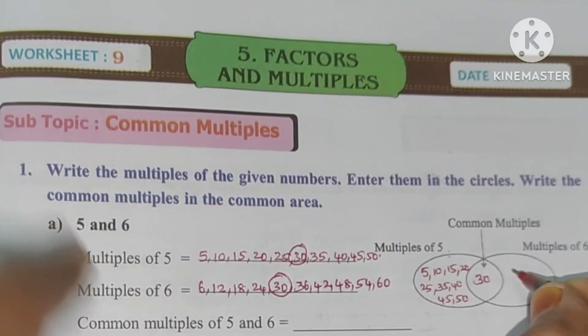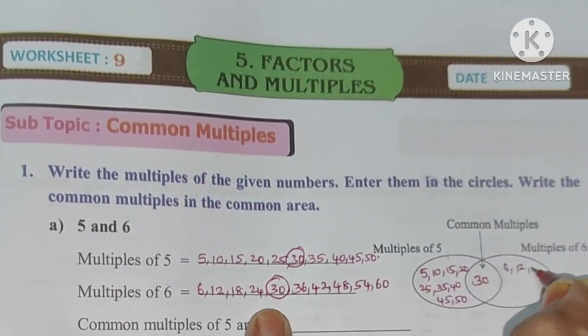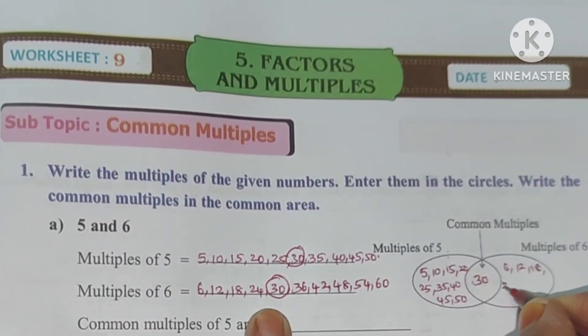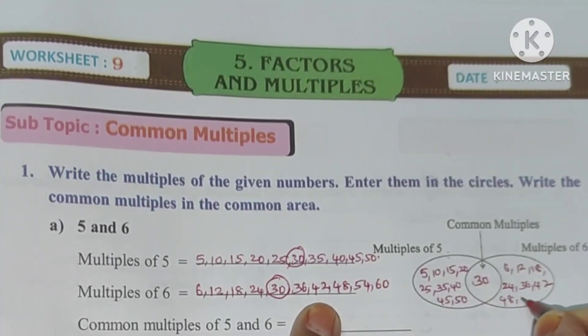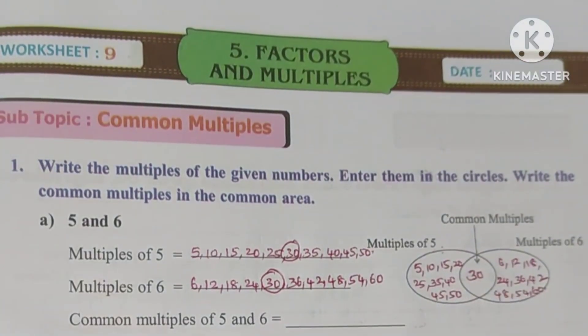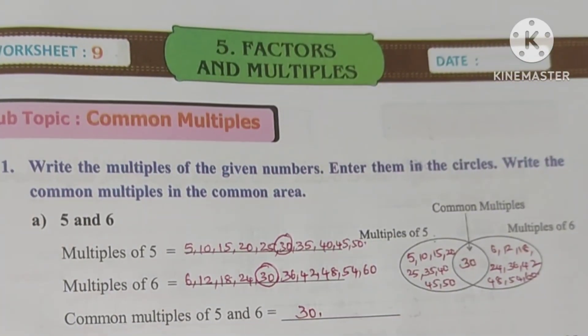So here we can write 30. For multiples of 6: 6, 12, 18, 24, 36, 42, 48, 54, 60.